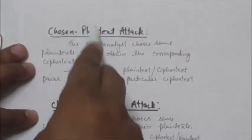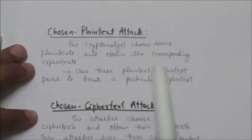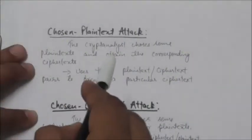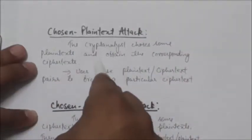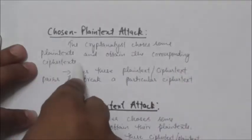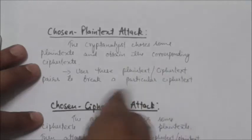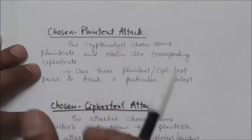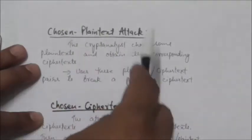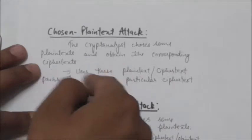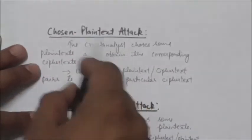The next type is the chosen plaintext attack. Here the cryptanalyst chooses some plaintext, obtains the corresponding ciphertext, and then uses these plaintext-ciphertext pairs to break a particular ciphertext. It is similar to the known plaintext attack, but here the plaintext-ciphertext pairs have been chosen by the attacker himself.